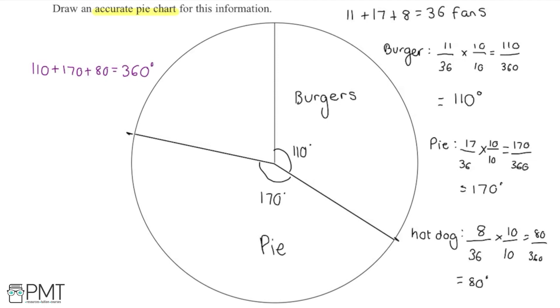And then finally, I can just check that this last angle is going to be 80 degrees because that's all that we have left, we're just going to fill in the hot dogs so this angle should be 80 degrees. But it's always a good idea just to check this in case any of the previous ones have been drawn in slightly wrong. And then I can write hot dogs in here.